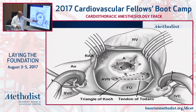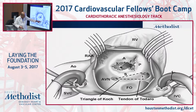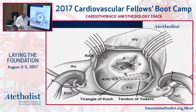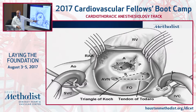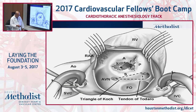The triangle of Koch is also bounded by the tendon of Todaro — named after Francesco Todaro, an Italian anatomist in the 19th century — which is a fibrous continuation of the eustachian valve at the orifice of the inferior vena cava. The importance of this is that at the apex of the triangle of Koch is where the AV node is located. This is an area where you must avoid placing sutures because of the risk of conduction block. The bundle of His emerges here, with the left bundle going to the left ventricle and the right bundle going towards the right.